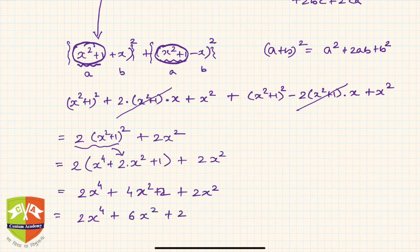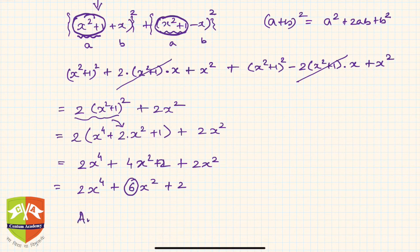The coefficient of x² in 2x⁴ + 6x² + 2 is clearly 6, so the answer is 6. Instead of using a trinomial expansion, we used only a binomial two-term square expansion and saved considerable time.